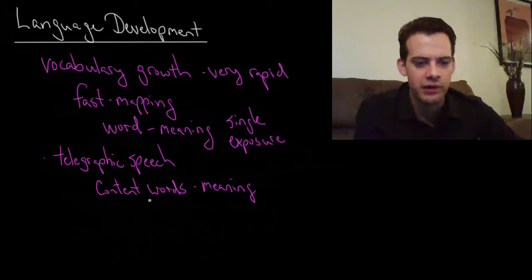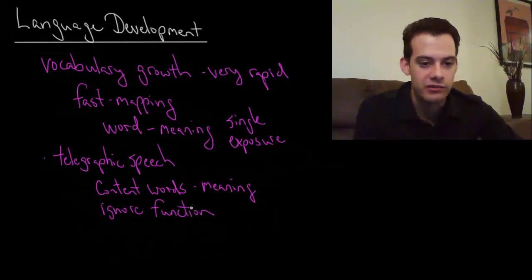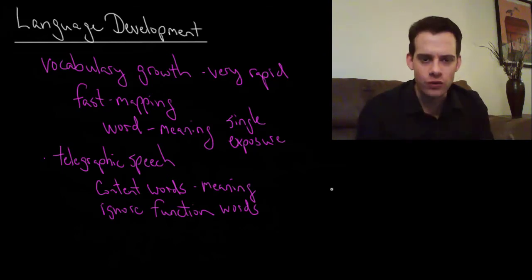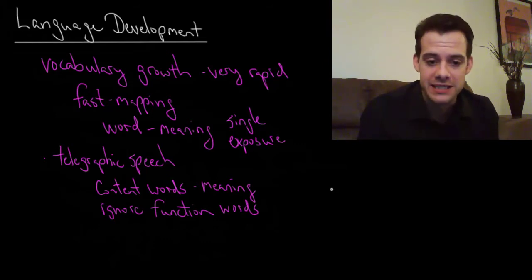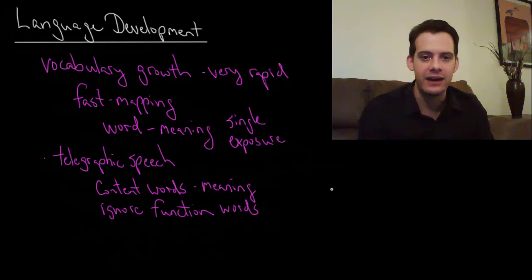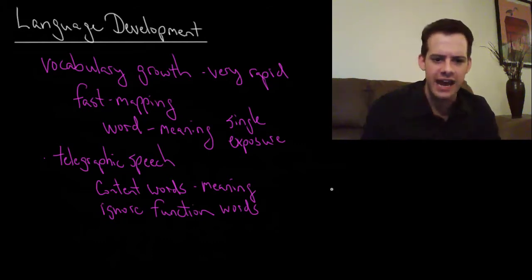And the children tend to ignore function words, words that serve grammatical purposes. Now this actually indicates that by ignoring those words they actually understand that those words are just serving grammatical purposes. They know that those words aren't the ones that have meaning. The ones that have meaning are the nouns and the verbs and so those are the ones you should worry about speaking first.